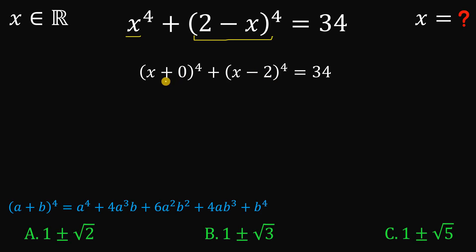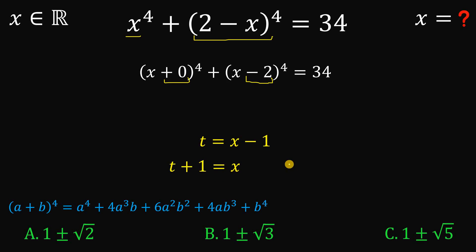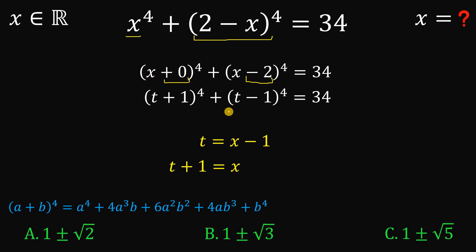Why do we do that? Here we have 0 and negative 2, and the middle term is negative 1. So let's say t equals x minus 1, meaning we can replace x with t plus 1. If we do that, our equation becomes (t plus 1) raised to the fourth power plus (t minus 1) raised to the fourth power equals 34. This is nice because expanding using Pascal's Triangle will eliminate some terms.